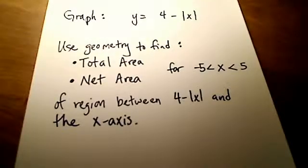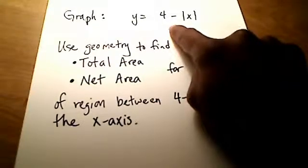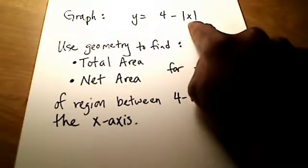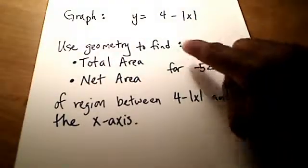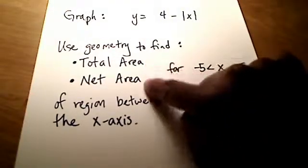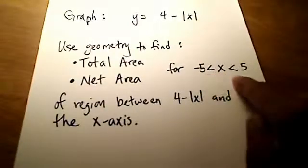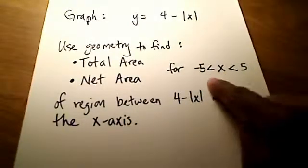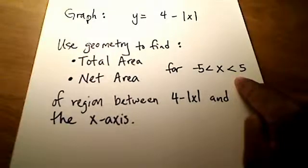In this problem, we are going to graph the equation y equals 4 minus the absolute value of x. Then we're going to use geometry to find the total area and the net area — two different things — within the domain between negative 5 and positive 5.